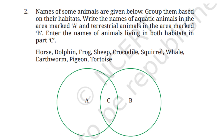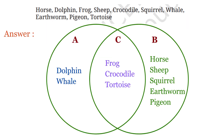Let's read the second question. Names of some animals are given below. Group them based on their habitats — write aquatic animals in area A, terrestrial animals in area B, and animals living in both habitats in part C. The animals are horse, dolphin, frog, sheep, crocodile, squirrel, whale, earthworm, pigeon, and tortoise. The place where animals live is called their habitat. Let's classify the animals based on their habitats.